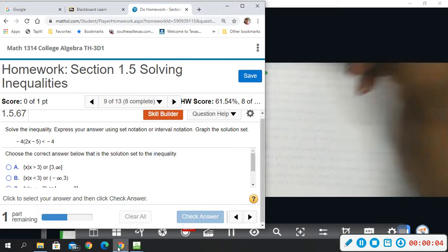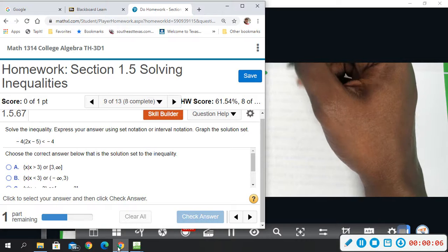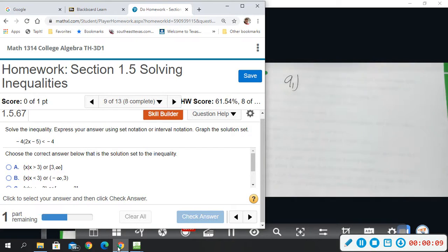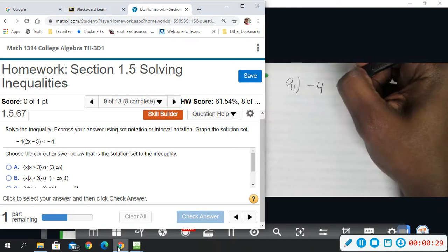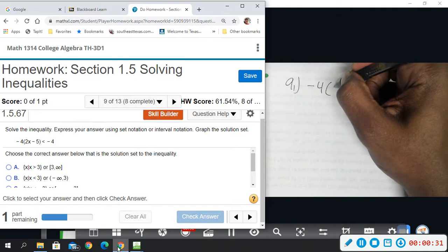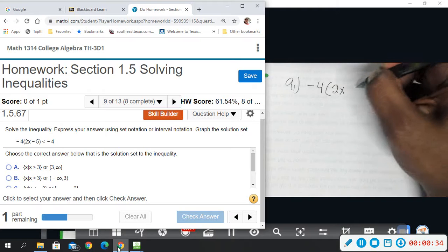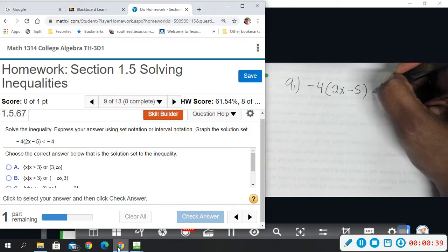Number nine. We want to solve the inequality, write it in set notation and then graph the solution set. It says set or interval, so I guess we'll do both. We'll graph it as well. Negative 4, then open parentheses, 2x minus 5, close parentheses, less than negative 4.